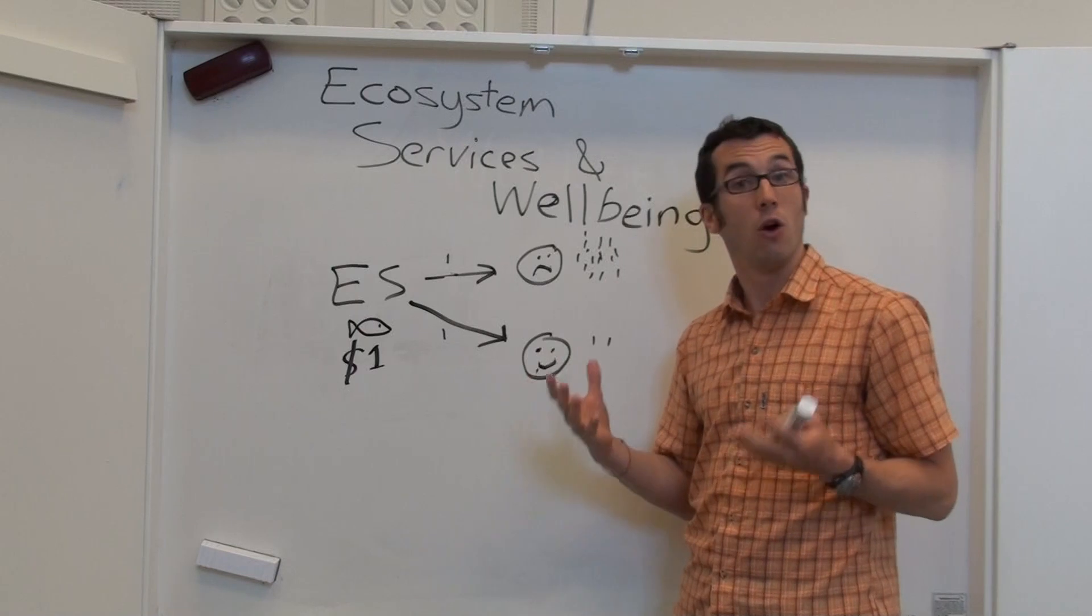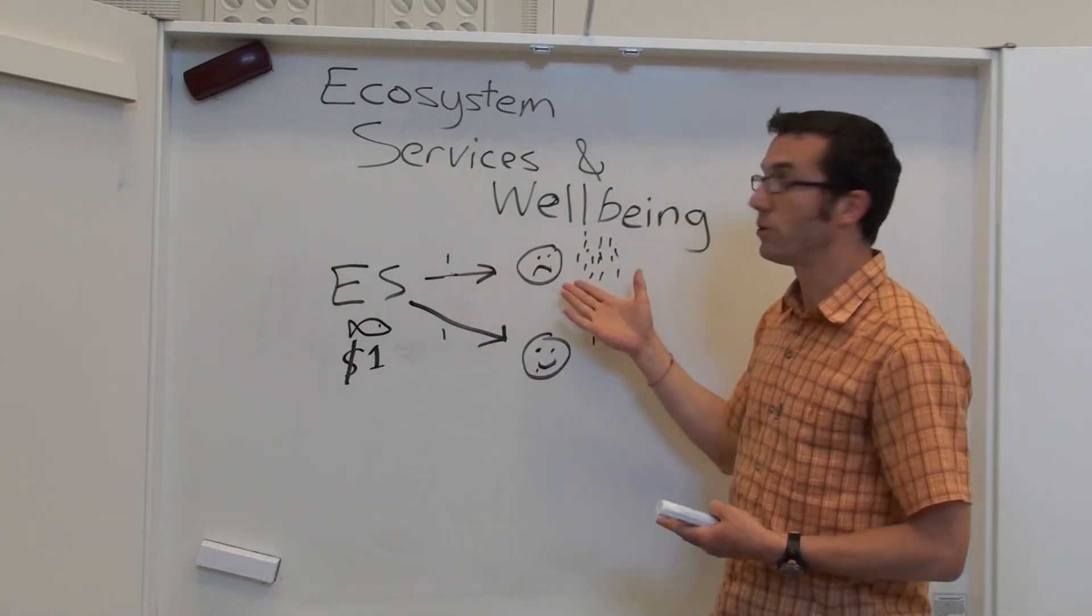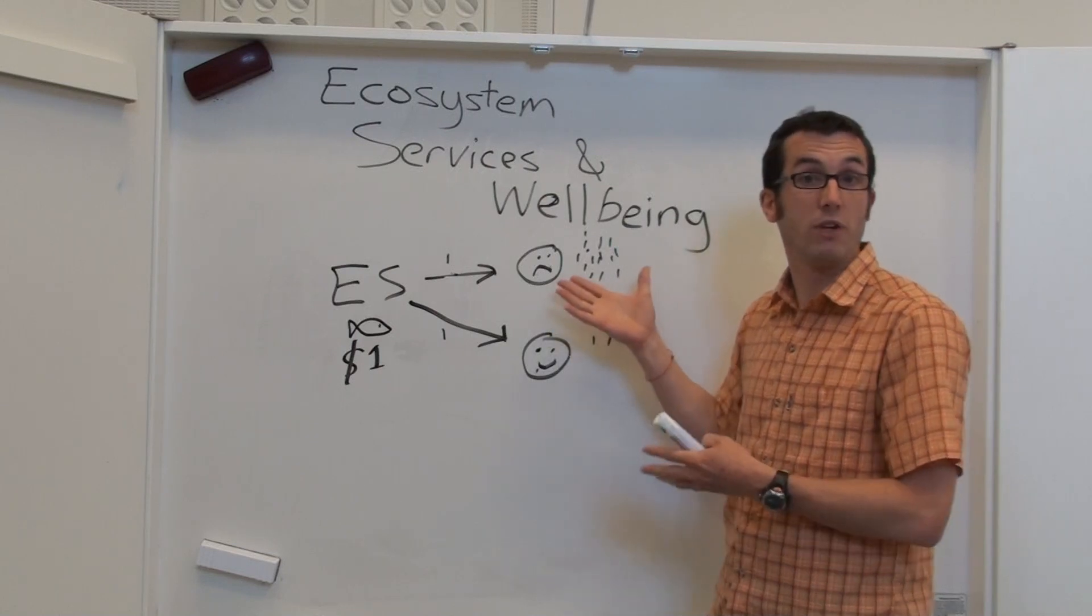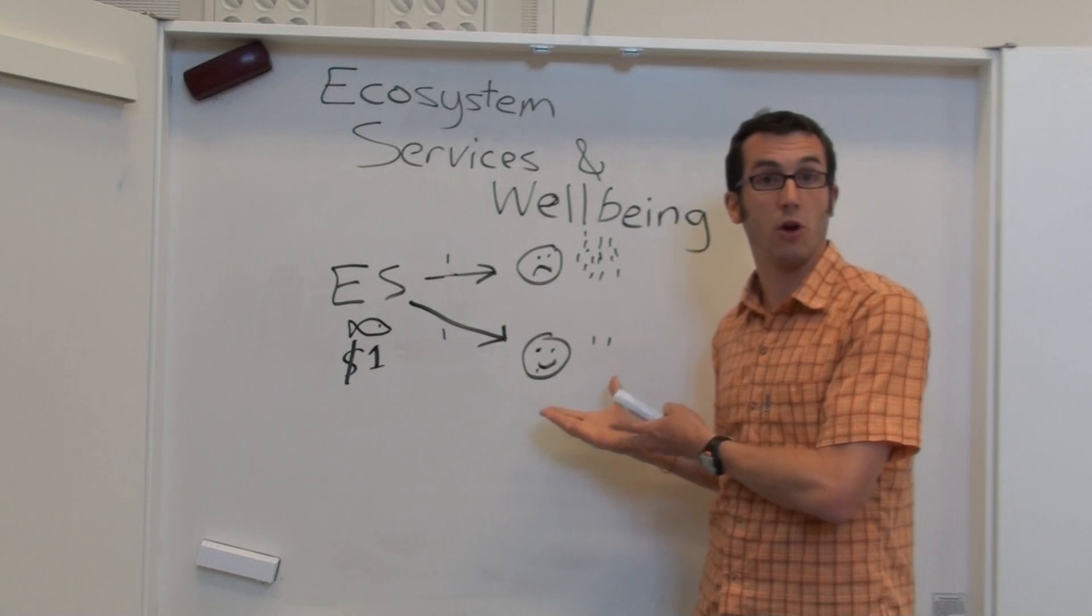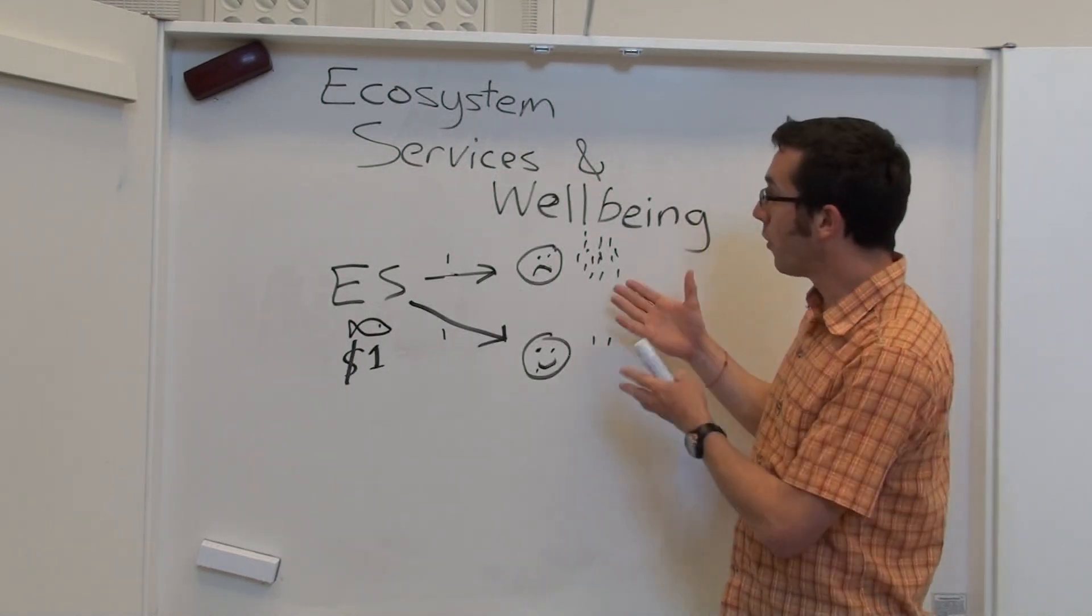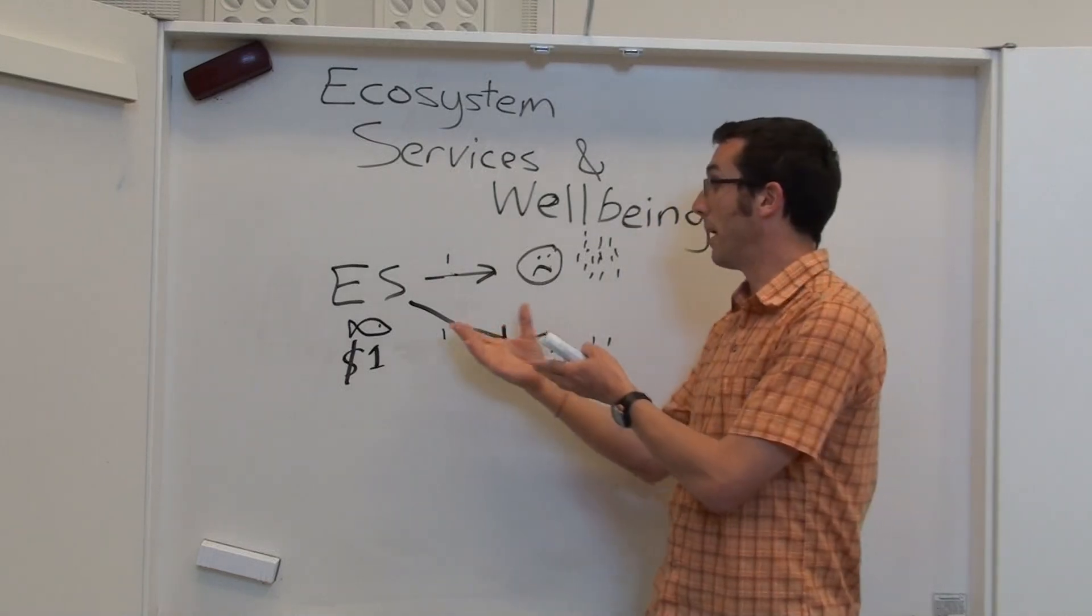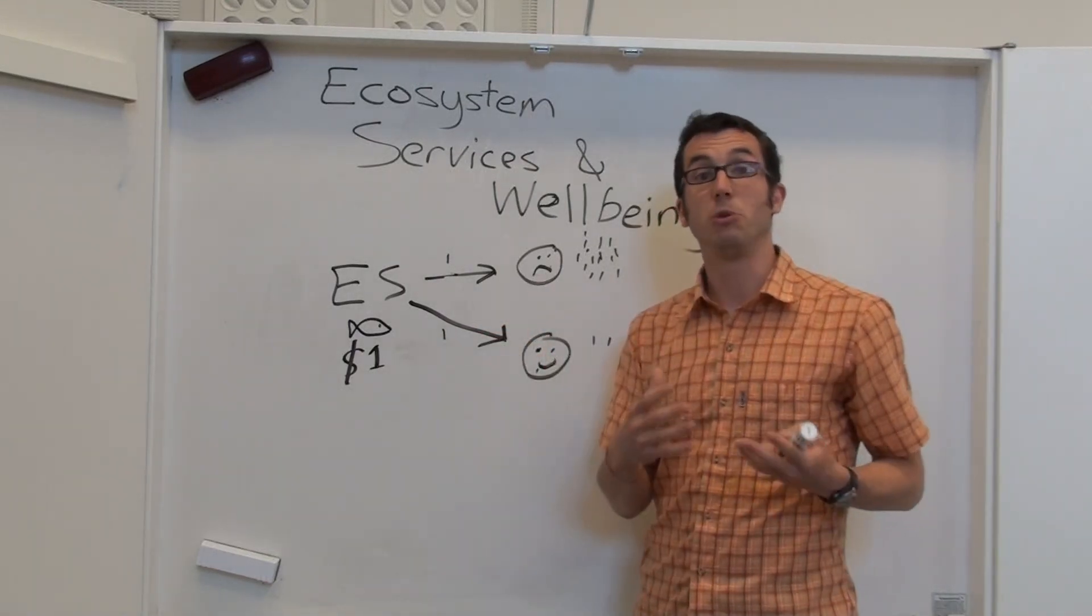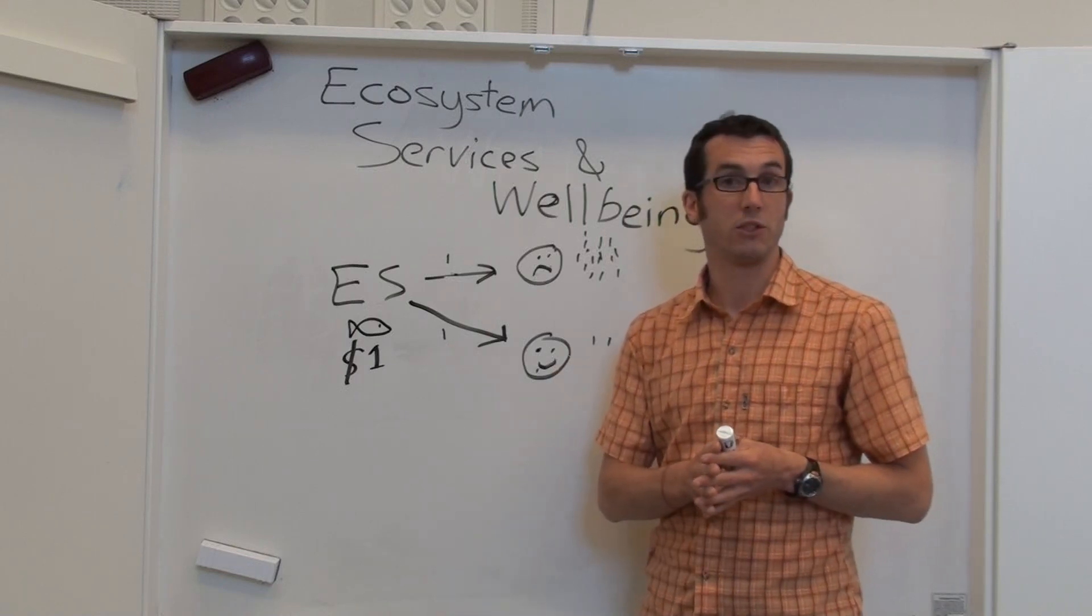has a very different implication on well-being, the overall well-being of this group, depending if it goes to someone who is very rich and doesn't really make much difference to their wealth, or someone who has no other livelihood opportunities. So we need to be thinking not just about the amount of an ecosystem service that's created, but also about who benefits and what contribution it makes to their livelihoods.